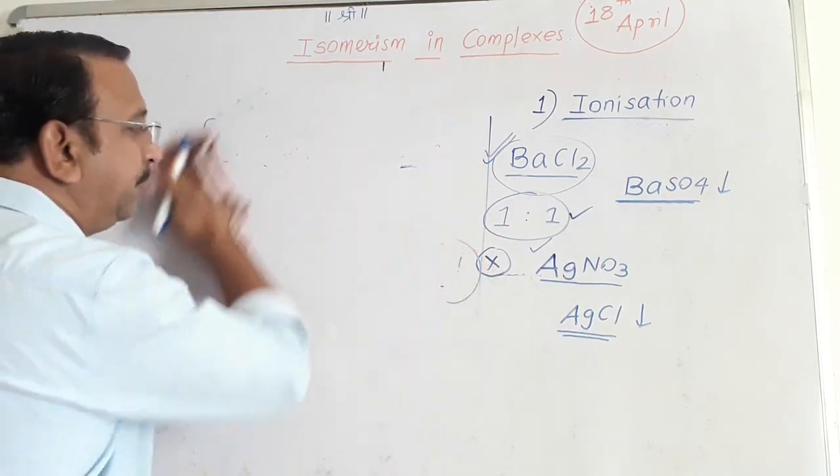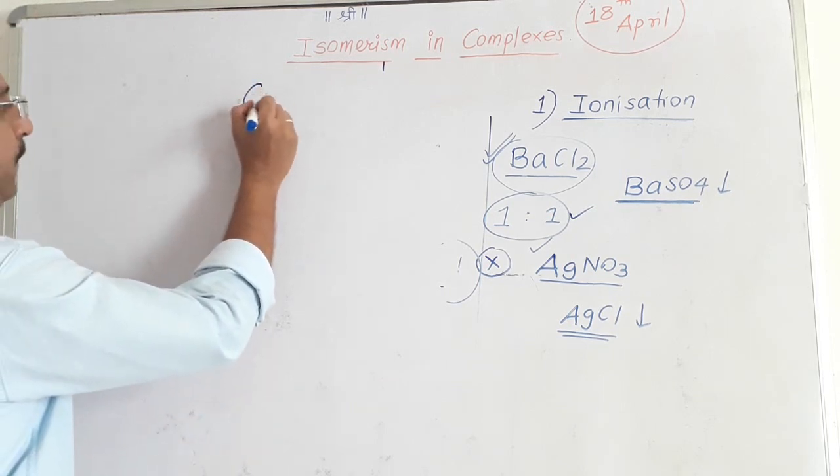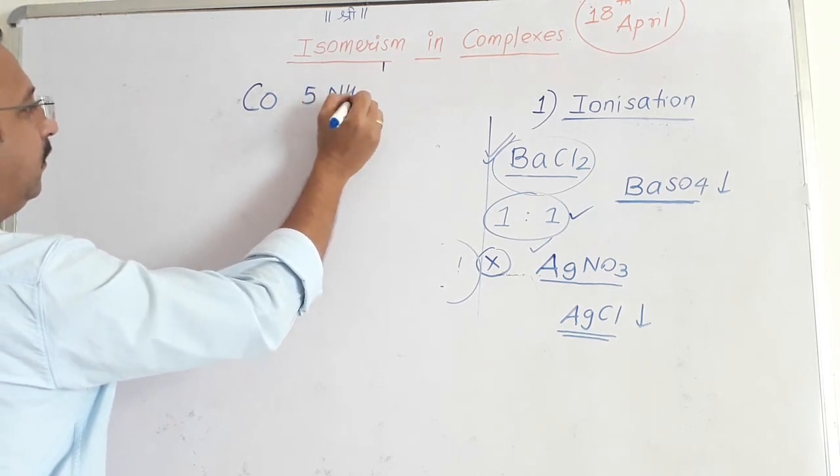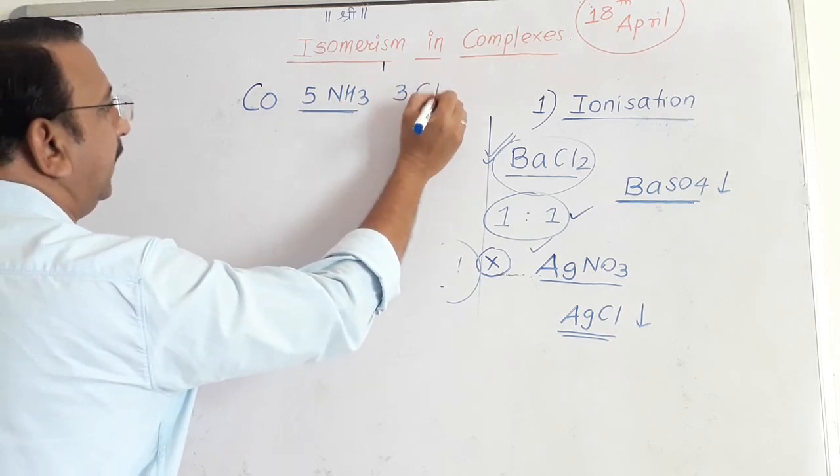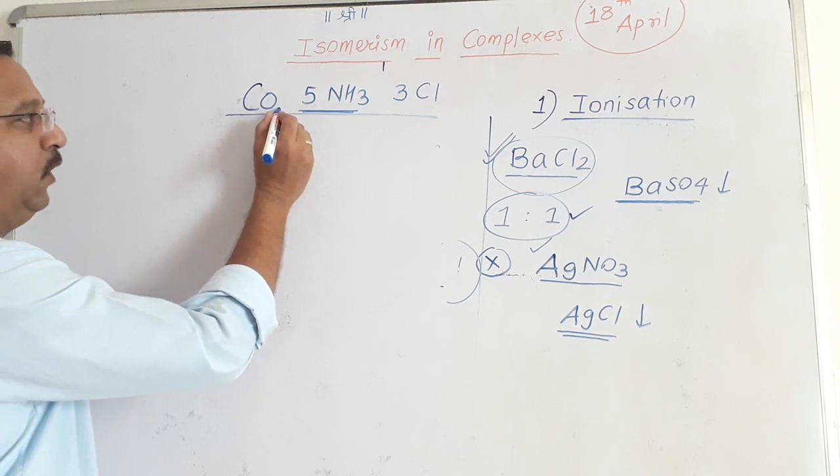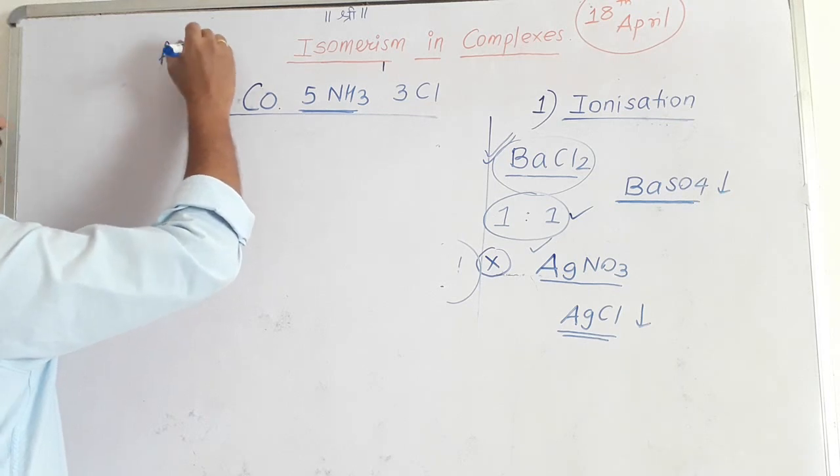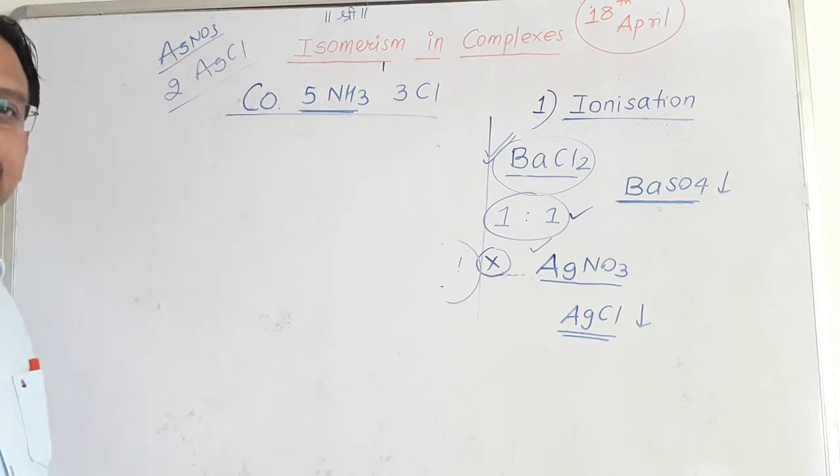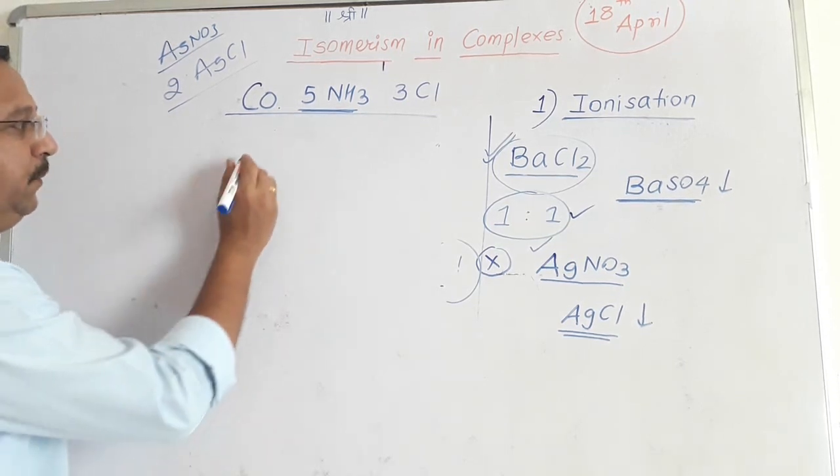Now suppose a compound having one cobalt, 5 NH3 and 3 chlorine, when reacted with AgNO3 solution, it gives 2 moles of AgCl. If it gives 2 moles of AgCl, what is the correct formula of the compound? You will be given options.